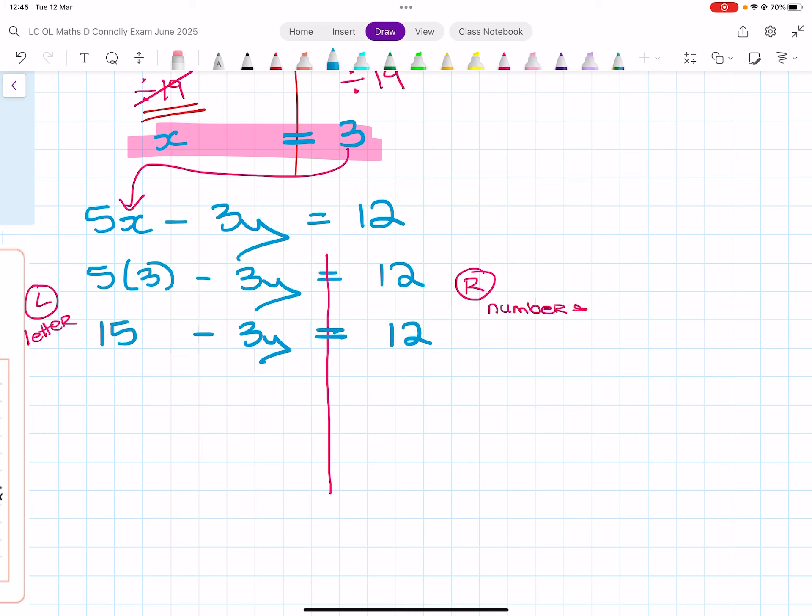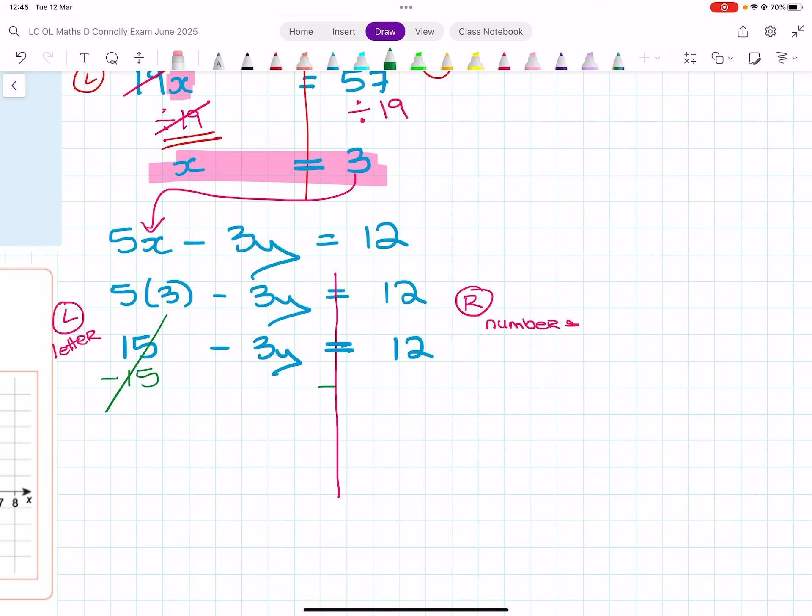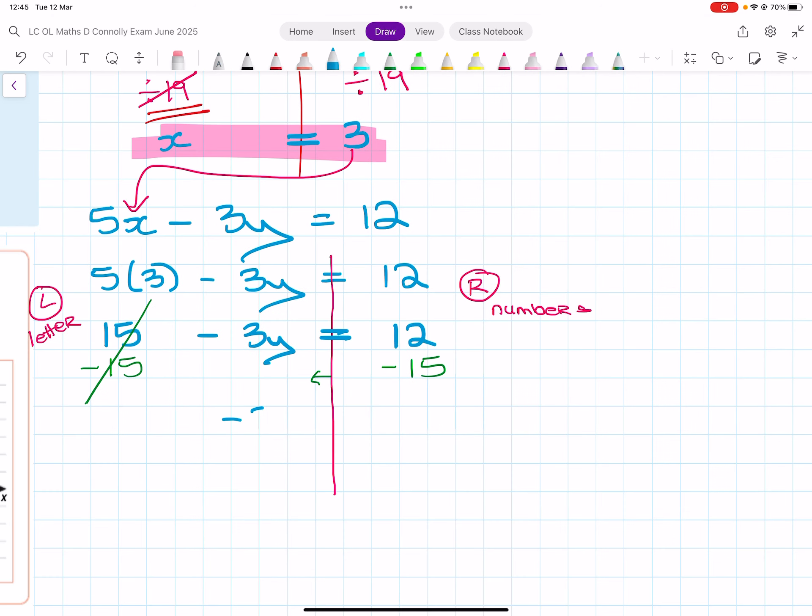15 is not a letter, so I need to remove it. So I remove a 15 with a minus 15. But if you minus 15 on the left hand side of this line, you need to minus 15 on the right hand side of the line. Tidy it up. So minus 3y equals 12 minus 15, either in your head or on your calculator, is minus 3.